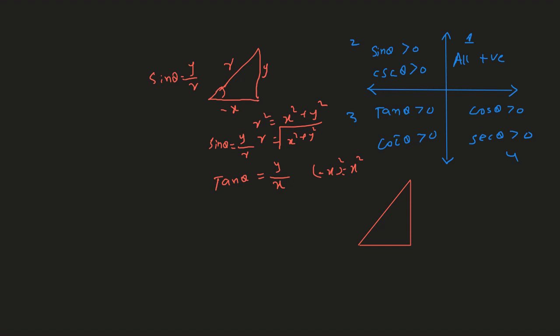Let's take secant theta. Secant theta is the reciprocal of cosine. Cosine theta equals base over hypotenuse — that is negative x over r, giving a negative value. So secant theta would also be negative: negative r over x. So cosine and secant are negative in the second quadrant, but sine and cosecant are positive due to positive y and r. So in the second quadrant, sine and cosecant are positive and all other trig functions are negative.